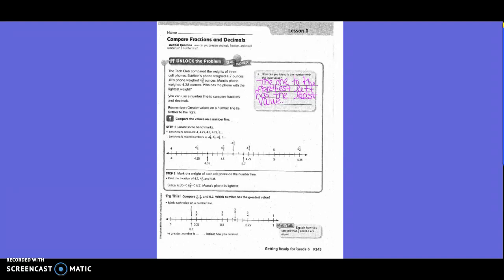Try this. Compare 1 fifth, 5 eighths and 2 tenths. Which number has the greatest value? Mark each value on the number line. They marked 1 fifth for you, 2 tenths for you, and 5 eighths for you. So do 1 fifth and 2 tenths cancel each other out? Yes, they're in the exact same spot. So which one's the greatest? 5 eighths.